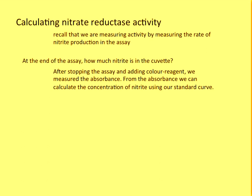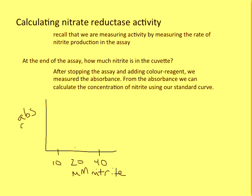Every group made a standard curve. Remember that it looked kind of like this — you're going to do this on Excel so it will look a little bit better. We used 10, 20, and 40 micromolar nitrite as our standards, and over here we're going to have the absorbance for each of those, read at 540 nm. Your curve will look something like this — it's not really a curve, it's a straight line. It should go through the origin, and you can use the trend line in Excel to get an actual equation.